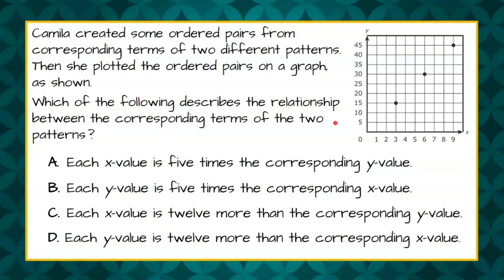Welcome back. So we are looking to describe a relationship between corresponding terms of two patterns. We need to first understand that this ordered pair is an x and y coordinate. So we go to 3 on our x-axis and up to 15 on our y-axis. So this ordered pair is an x and a y value.